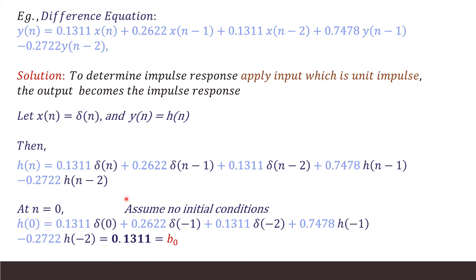To solve this, we consider several values of n. The first value is n equals 0. On substituting n equals 0, and assuming no initial conditions, terms like delta(−1), delta(−2), h(−1), and h(−2) all become 0. Delta(0) from the definition of the impulse function is 1. The result obtained is simply the first numerator coefficient, which is b0.